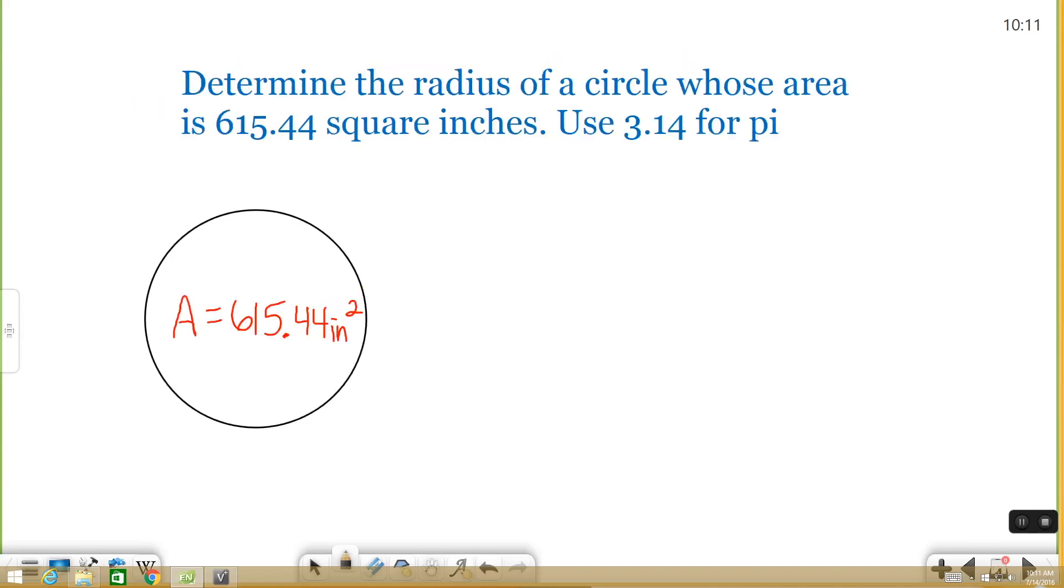Now let's try the opposite with the same type of example. Let's say they give you the area of a circle and they ask you, what is the radius? Well, you can still use the area formula. You just solve for a different part of it. So area equals pi r squared. Plug in what you know. Solve for what you don't.